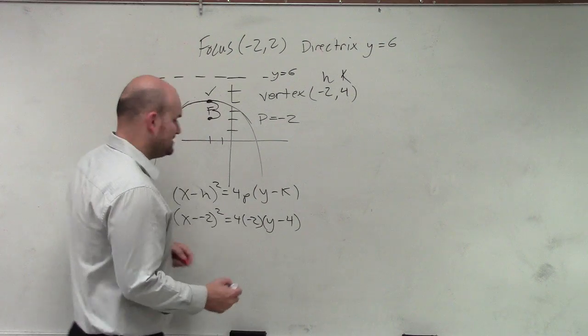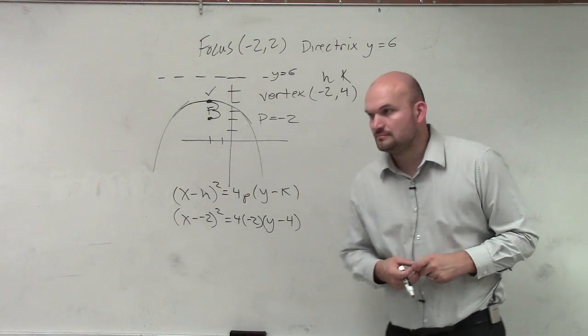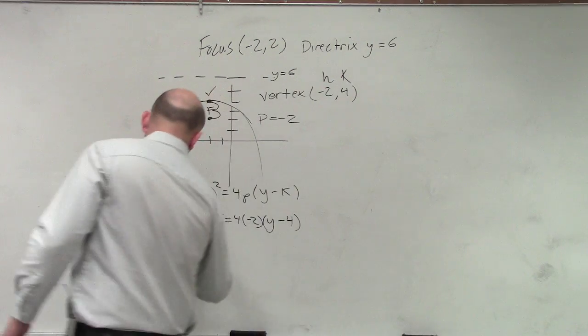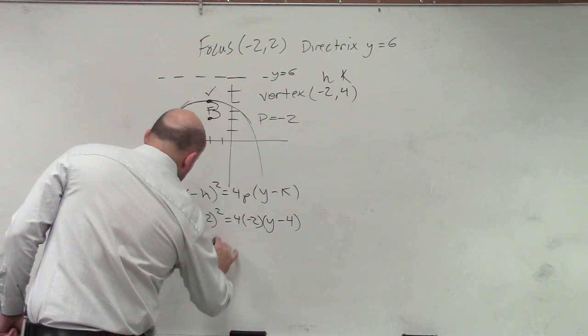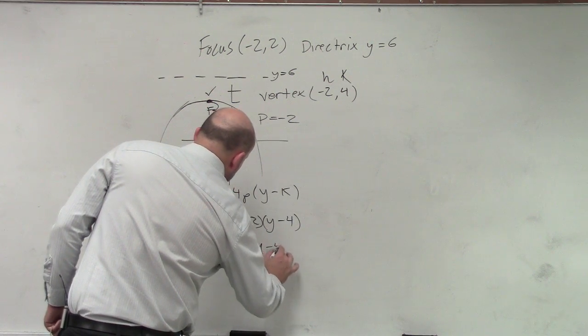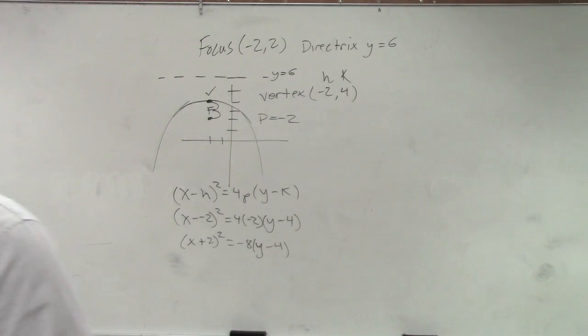Does everybody see how I plugged in everything? Then we just simplify. X plus 2 squared equals negative 8 times Y minus 4. And then you're done.